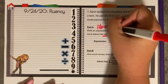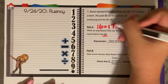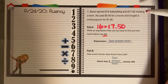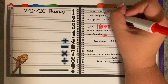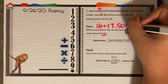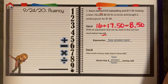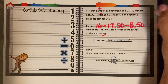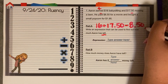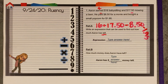So 16 plus $17.50 — you can write it like 17 and 50 hundredths as well. Then he paid, which means we're subtracting. Earning is adding; paying is subtracting. He paid $8.50 for a movie, and we're going to subtract again for $1.95, so then minus $1.95. I know that is a little bit big in writing — I apologize.